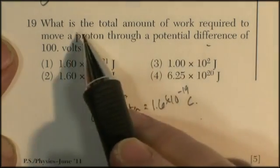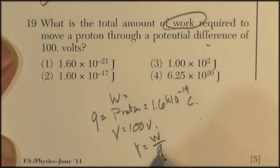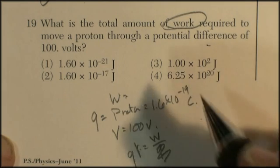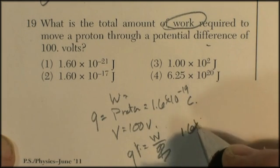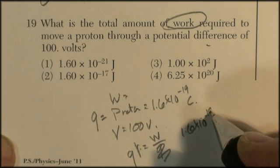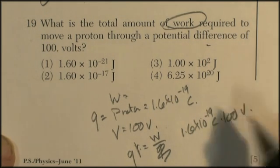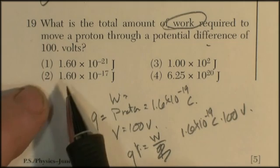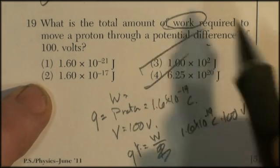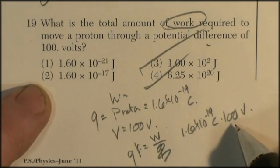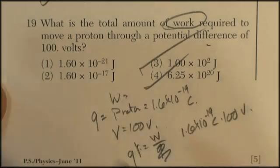And we're looking for the work done. The formula was voltage equals work divided by charge. They're asking for work. So multiply both sides by charge to get rid of it. Work is equal to charge times the voltage. So 1.6 times 10 to the negative 19 coulombs times 100 volts. Well, 1.6 times 100, I'm going to be looking for an answer with 1.6 in it. And 19 times 100, that's going to be negative 17.